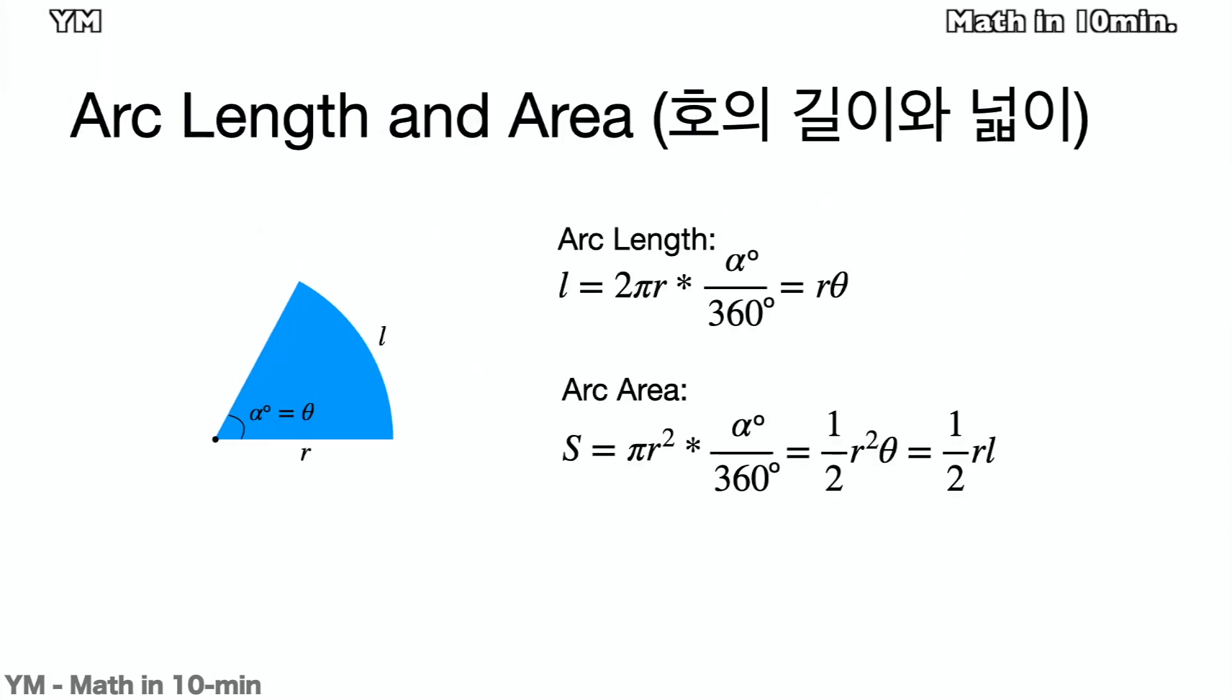By using radians, the arc lengths and areas can be simply translated. Suppose that an arc has a radius r, and the center angle is alpha in the angle and theta in radian. If we use the degrees, then the arc length is 2 pi r times alpha degrees over 360 degrees. But if we use the radians, then it can be translated to r times theta.